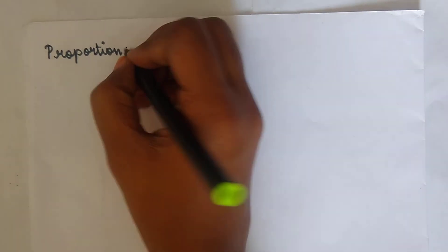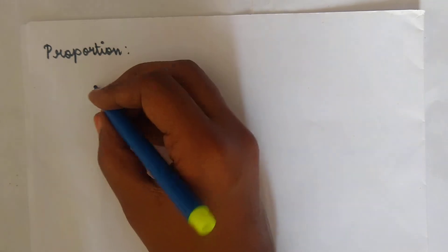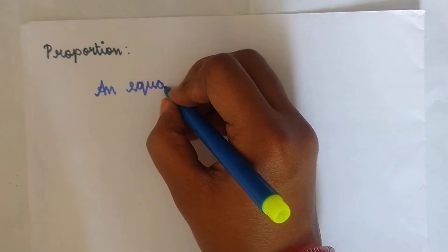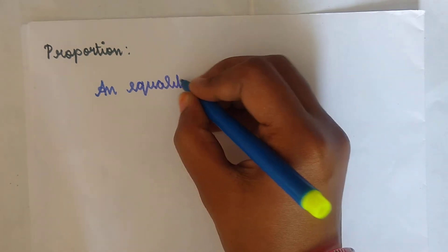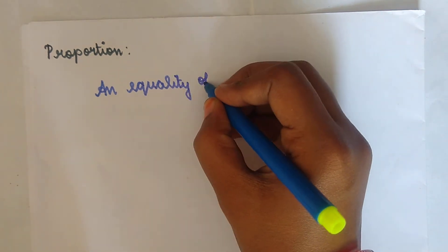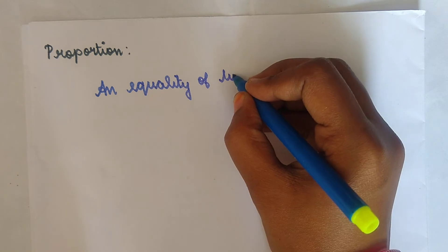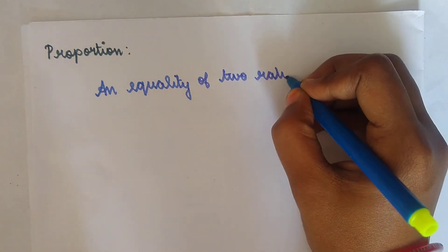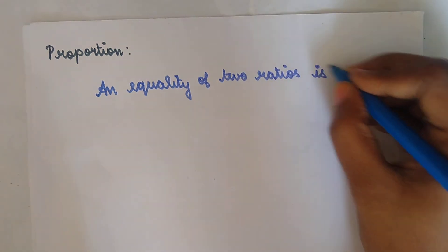Here we have to write the definition of proportion. The equality of two ratios is called proportion.